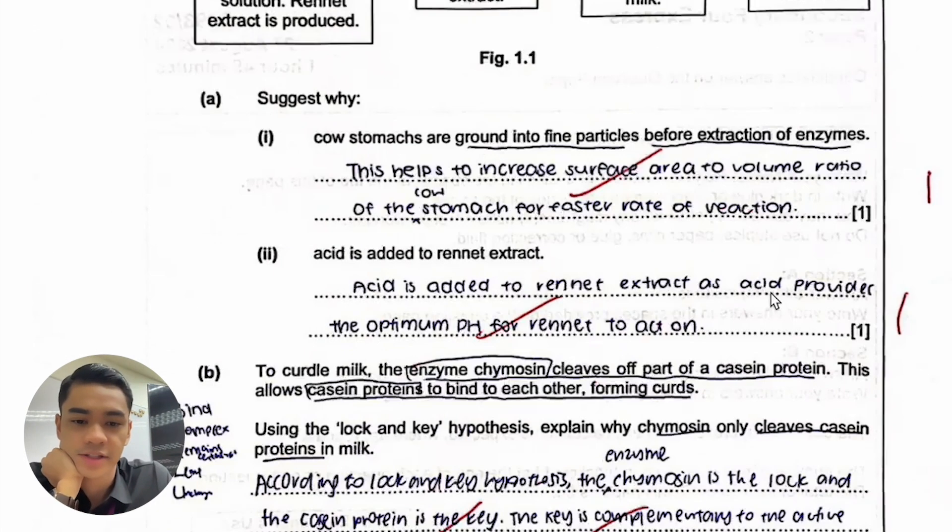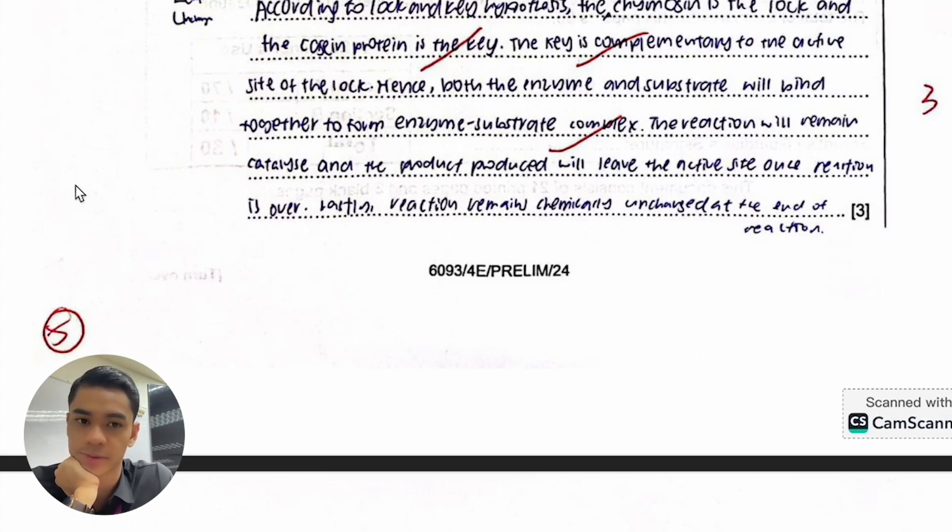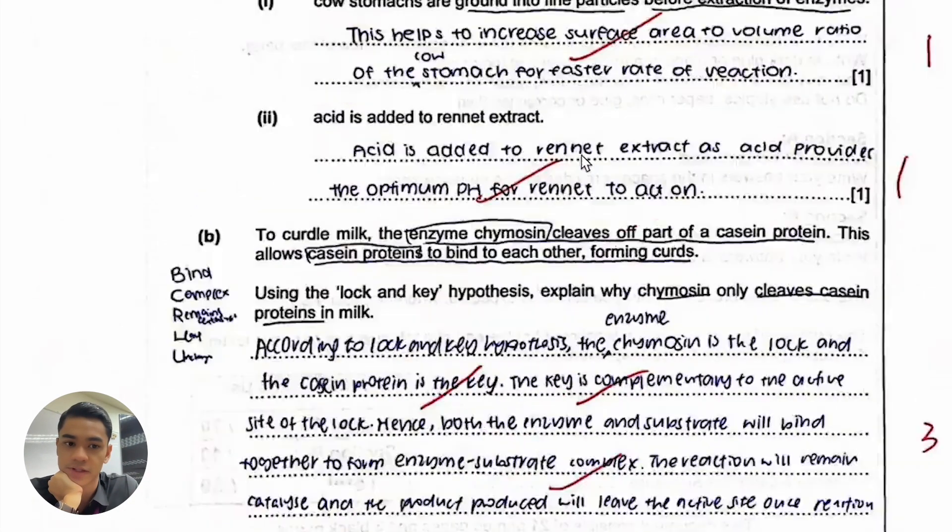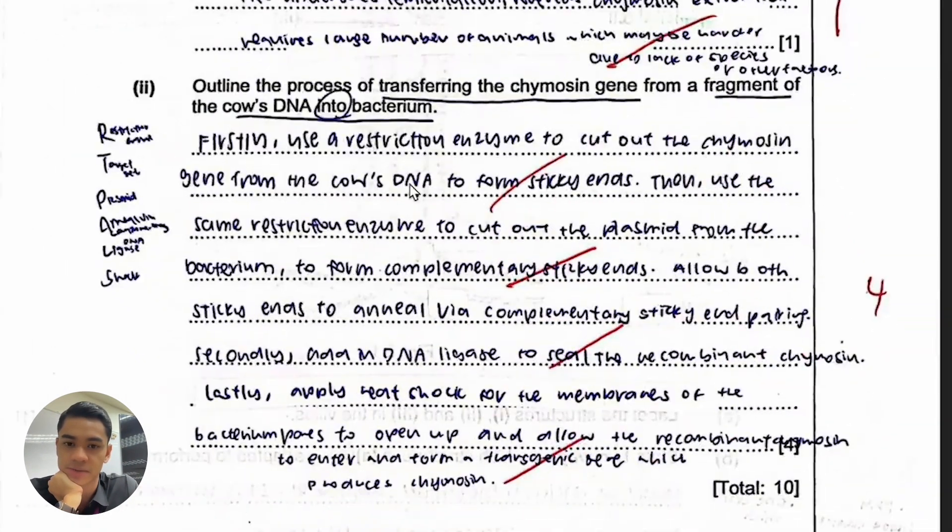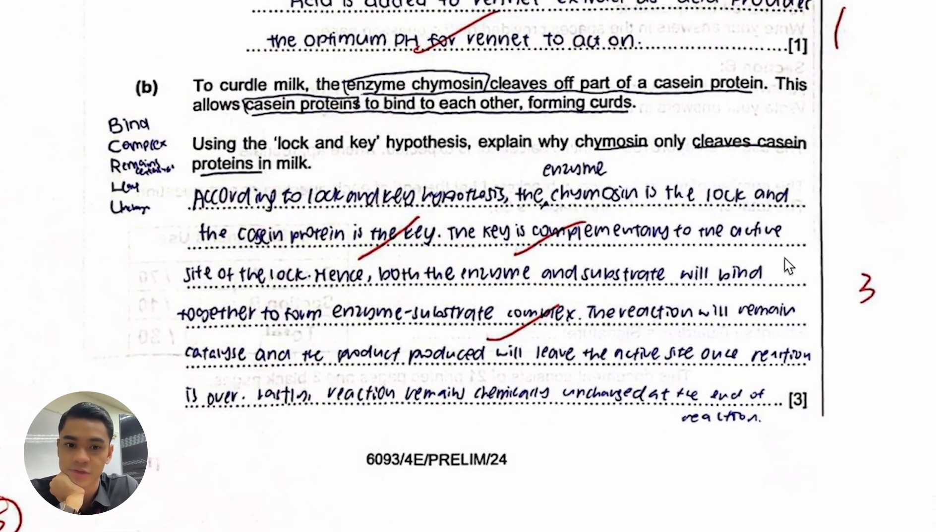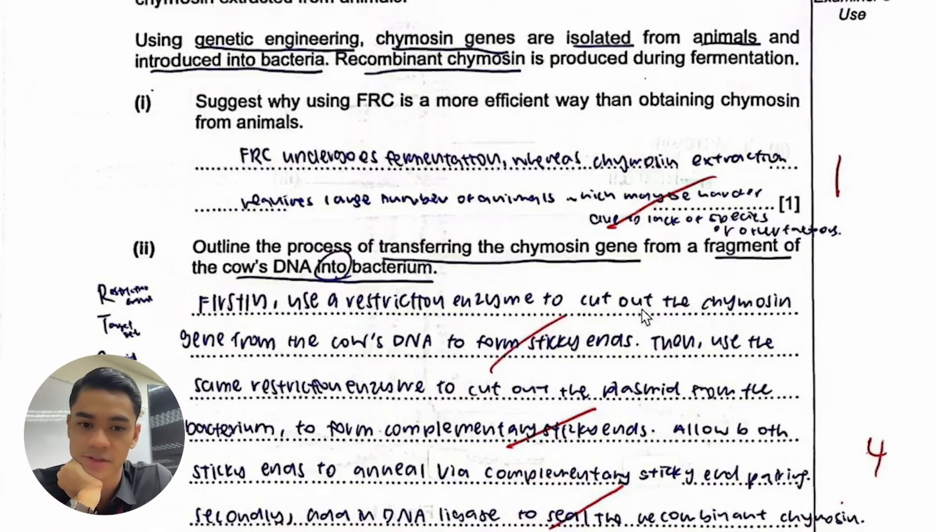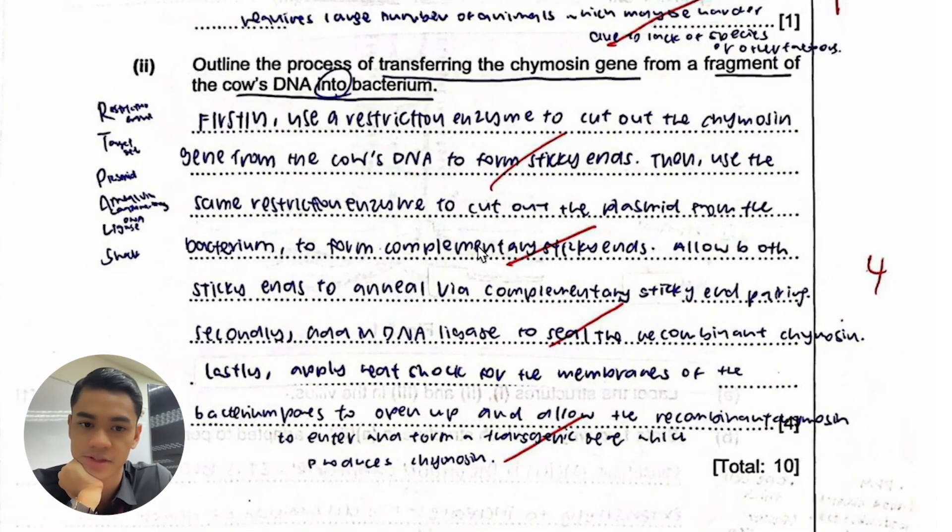I'm going to go through this and pick out patterns that I noticed, trends, and give you feedback on this reading paper. First thing I noticed is full marks. The teacher is taking all these keywords, so because you're spamming keywords like sticky ends, complementary DNA, ligase, transgenic, that's why you get full marks. The more keywords you spam, the higher chance you'll get full marks.